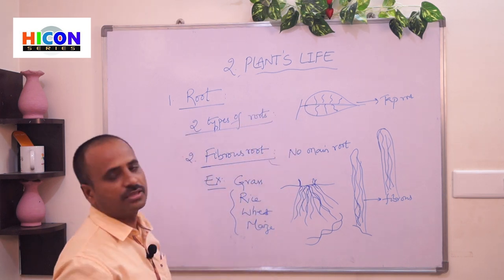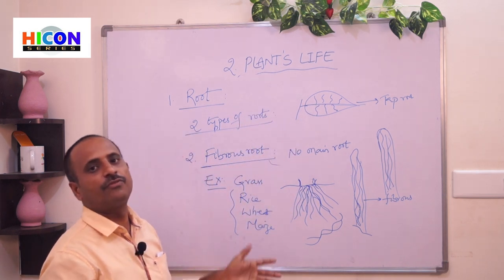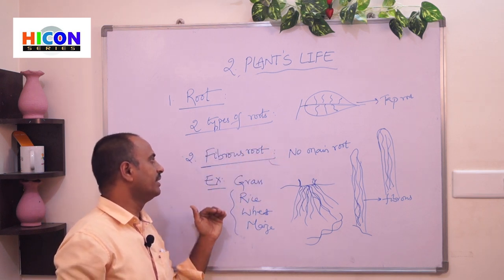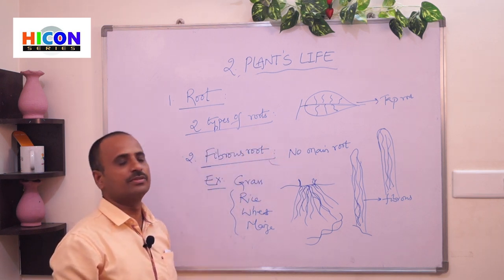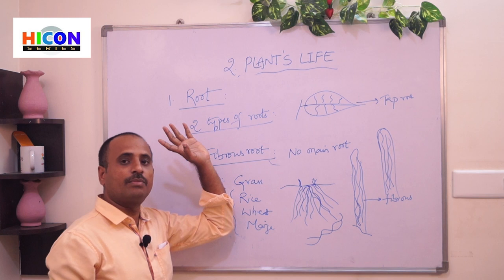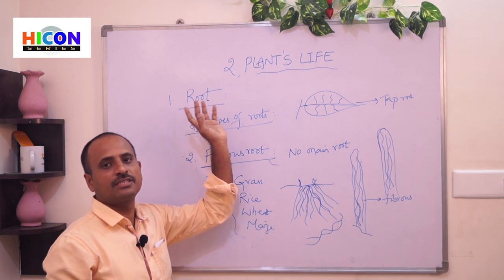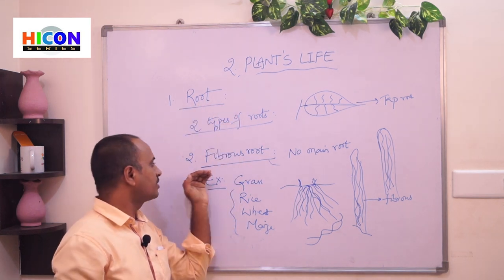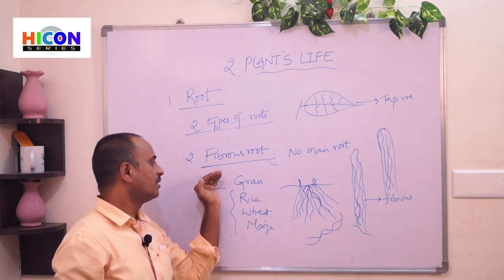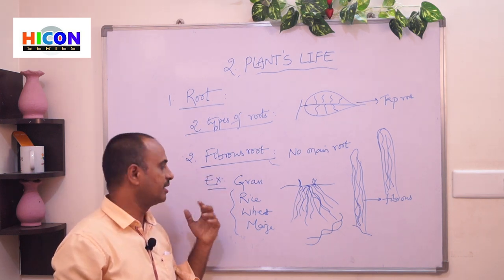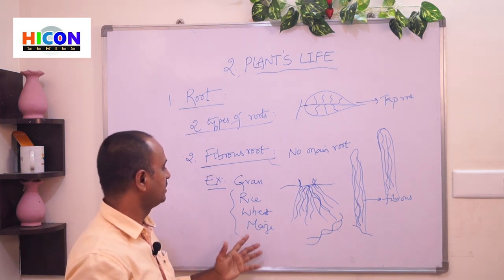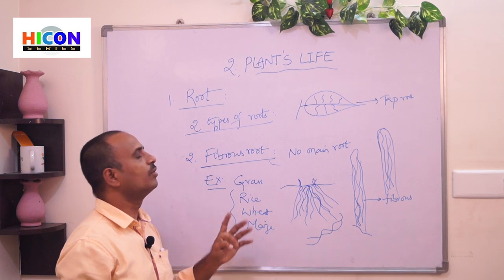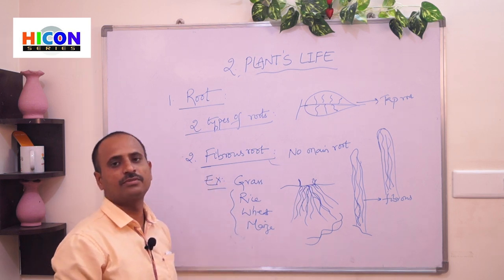So these are the two types of roots — tap root and fibrous root. Examples of tap root: hibiscus, mango tree, banyan tree. Examples of fibrous root: grass-related plants like rice, wheat, and maize. These are the types of roots.